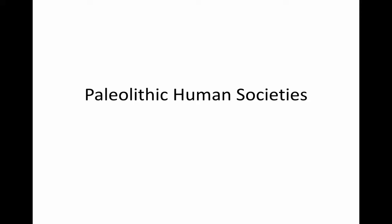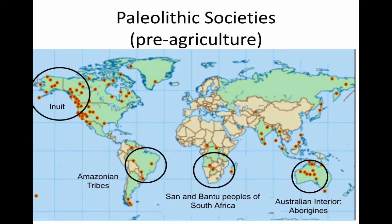Hi everyone. In this hopefully short video, we will be looking at Paleolithic human societies. Paleolithic refers to the earliest hunter-gatherer human societies before the Neolithic Revolution, which was the revolution that introduced agriculture to human societies. A little bit on why we know a lot about Paleolithic people is because there are still humans that live in Paleolithic or hunter-gatherer societies.